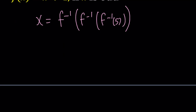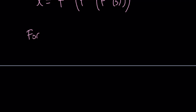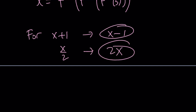We need to apply f inverse three times starting from 5. Here's how we define f inverse: for x plus 1, the inverse is going to be x minus 1 — so f adds 1 and f inverse subtracts 1. For x over 2, the inverse is going to be 2 times x. So we're going to either subtract 1 or double the number.